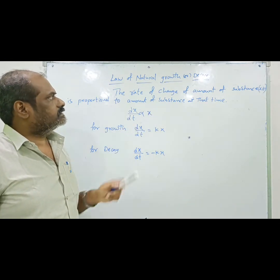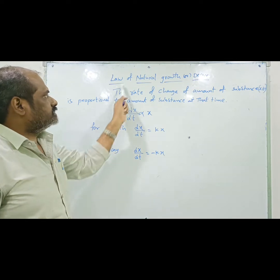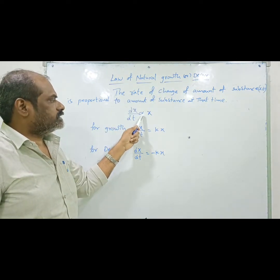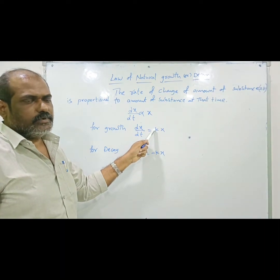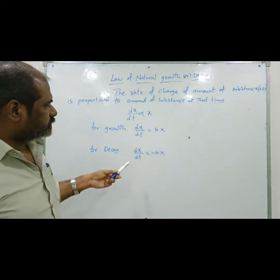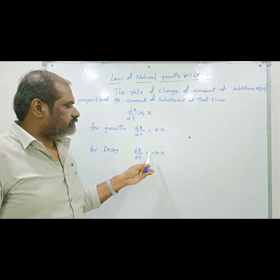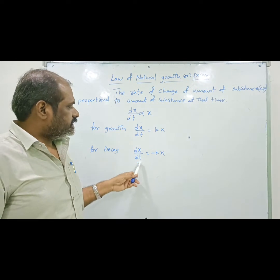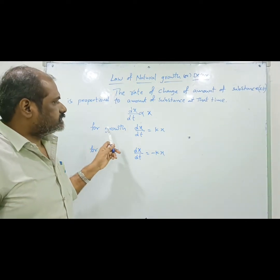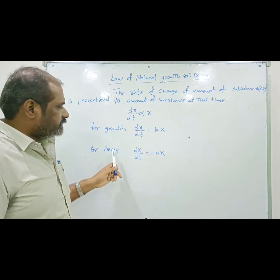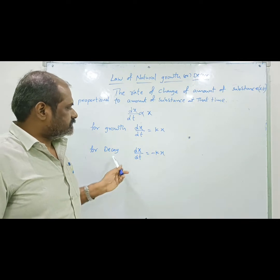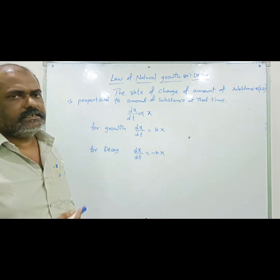For the law of natural growth, growth means increasing. Increasing means the derivative has a positive value, so dx/dt = kx. For decay, decreasing means the derivative is always negative, so dx/dt = -kx. For growth, the derivative is always positive; for decay, the derivative is always negative.